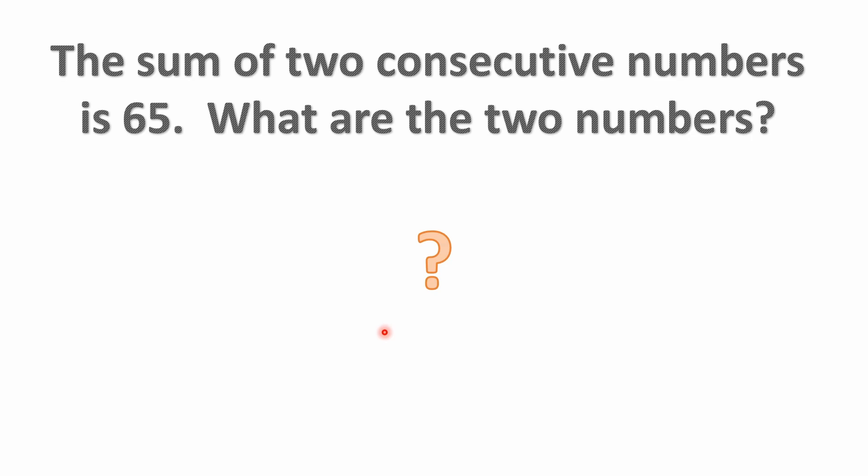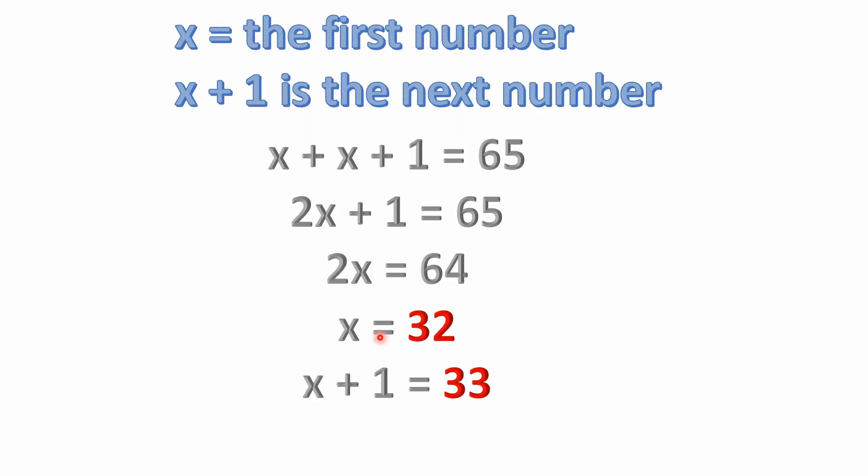But here we're saying there's a sum of two consecutive numbers equals 65. What are they? All right, well let's think about this. Let's just assign a variable for the first number in this sequence, and we'll call it x, the variable. So the very next number would be x plus one.